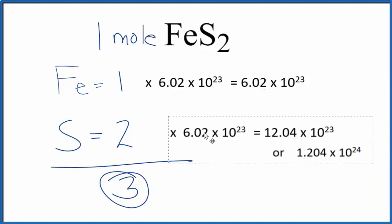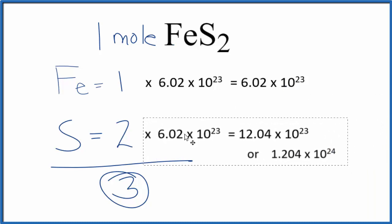For sulfur, we would just multiply the two by Avogadro's number, and that would give us the number of sulfur atoms in one mole of FES2.